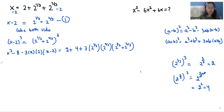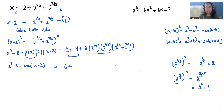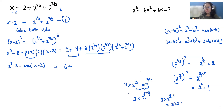Calling this equation number 1: x³ minus 8 minus 6x times (x minus 2) equals 6 plus 3 times 2^(1/3) times 2^(2/3). Since the bases are the same and powers multiply, 2^(1/3) × 2^(2/3) = 2^(1/3 + 2/3) = 2¹ = 2, giving 3 times 2 = 6. So the right side is 6 plus 6(x minus 2), replacing 2^(1/3) plus 2^(2/3) with x minus 2 from equation 1.